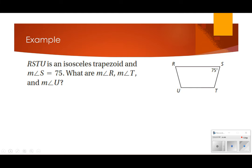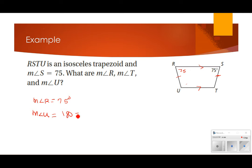Trapezoid RSTU is an isosceles trapezoid, and the measure of angle S is 75 degrees. We want to find angles R, T, and U. Since this is isosceles, the base angles are congruent, so the measure of angle R is also 75 degrees. Because the sides are parallel, consecutive interior angles add up to 180 degrees. So the measure of angle U is 180 minus 75, which is 105 degrees, and angle T is also 105 degrees.